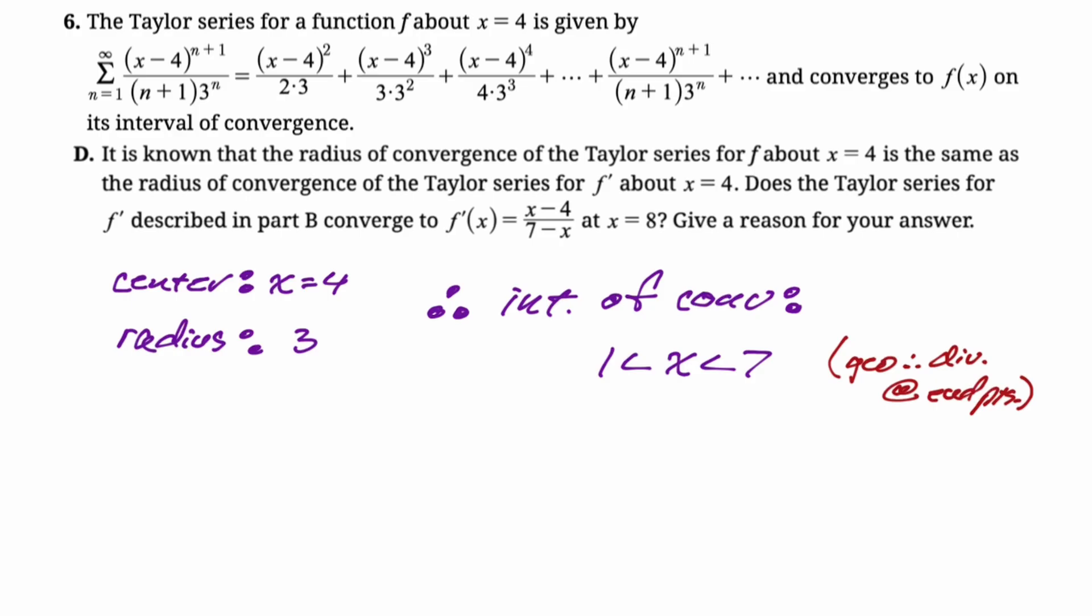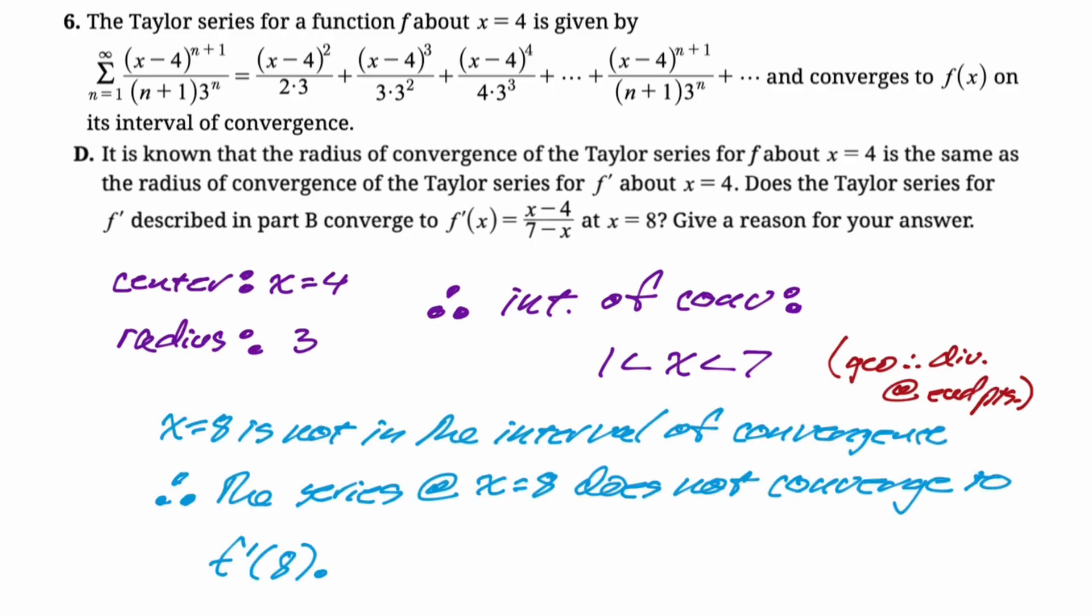I don't think we really need that here, because x equals 8 just straight up is not in the interval of convergence, so the series does not converge to f prime of 8, which is the question that they're asking here. So I'm just going to write that: x equals 8 not in the interval of convergence, therefore the series at x equals 8 does not converge to f prime of 8. I think that's what they're asking. I gave a reason for my answer. I think that's good enough.